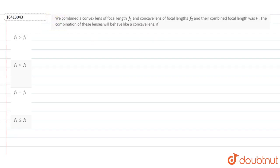So in this question we are asked that we combined a convex lens of focal length f1 and a concave lens of focal length f2, and their combined focal length was f. The combination of these lenses will behave like a concave lens. f1 is positive because this is a convex lens focal length.